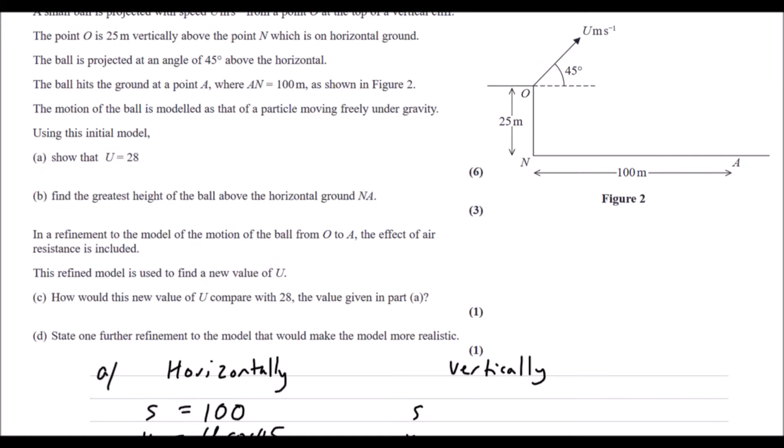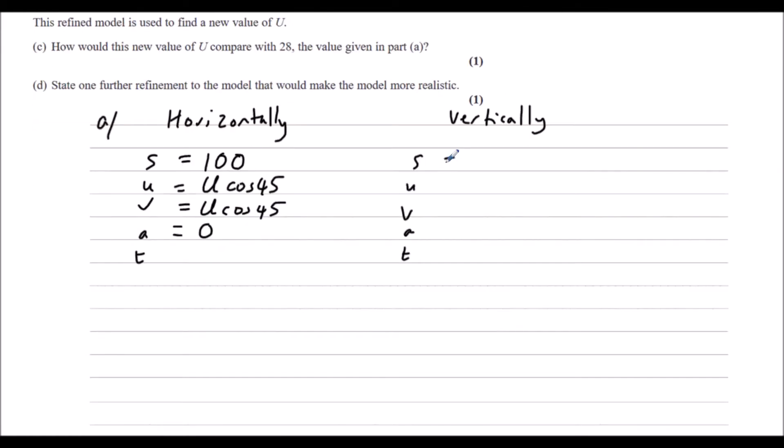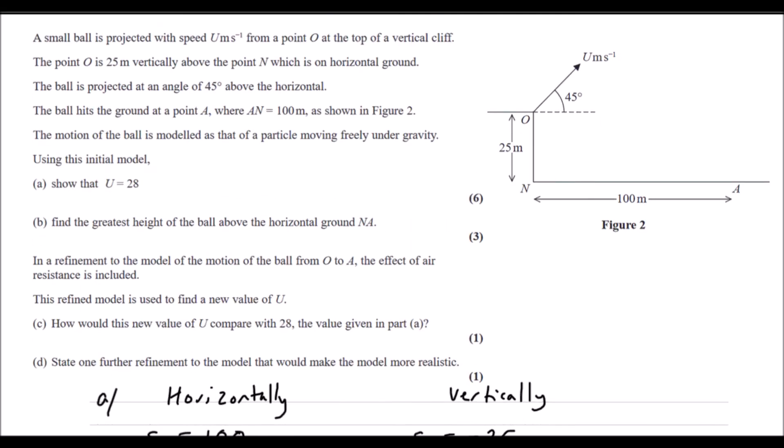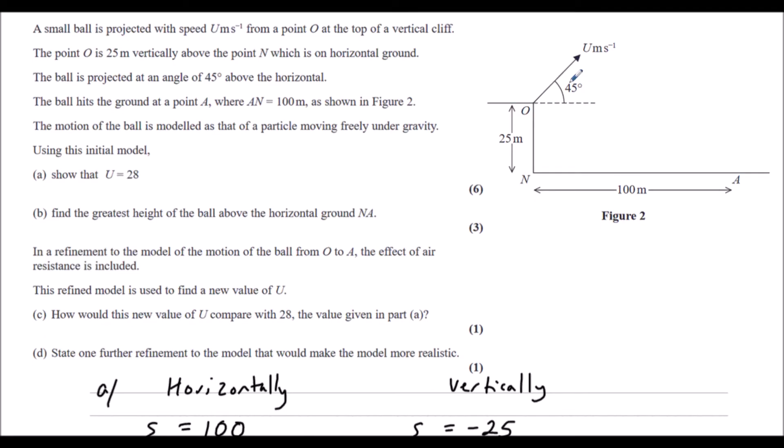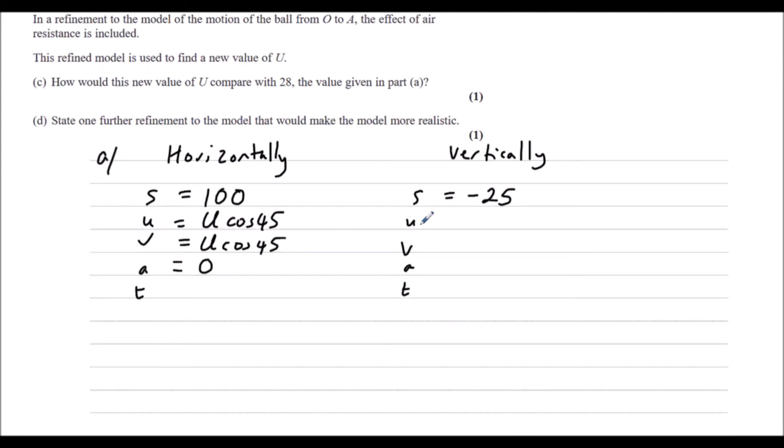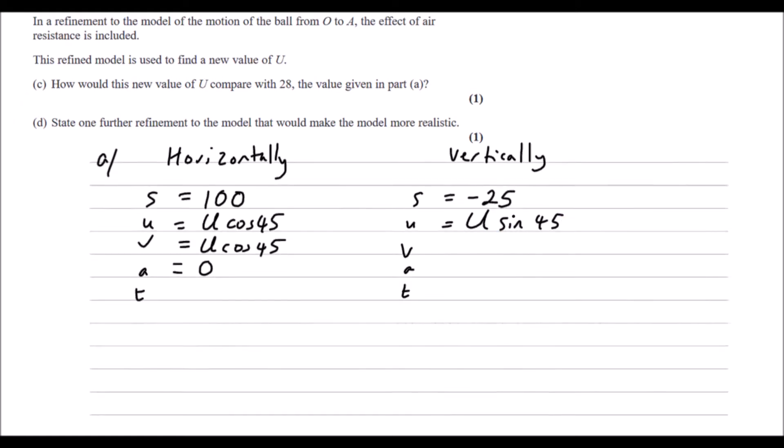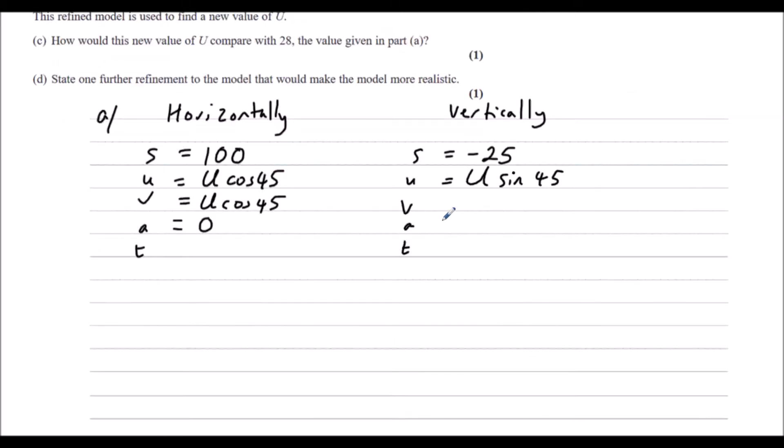Vertically, it goes down 25 meters. So we can say displacement is negative 25. The initial velocity is u sin 45. We don't know the final velocity. We know the acceleration is due to gravity, so we'll say minus g or minus 9.8. And we don't know the time.